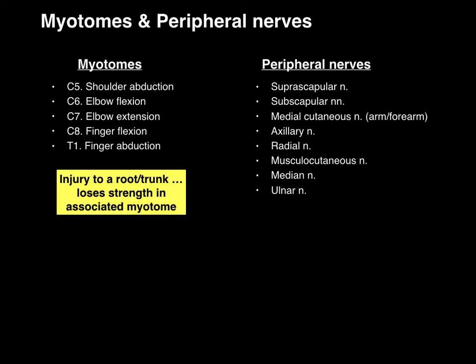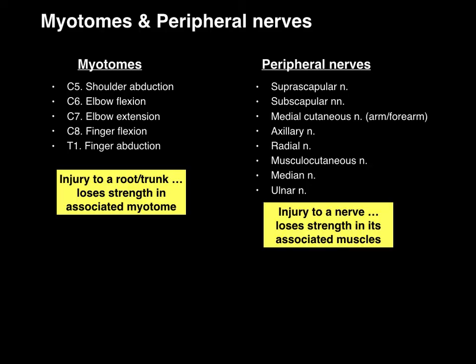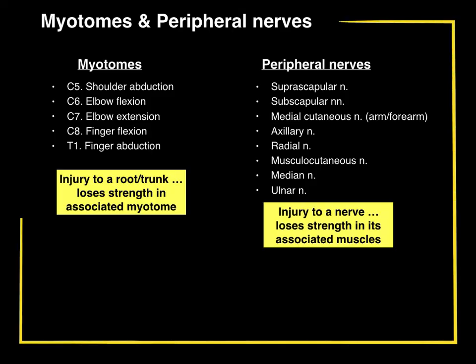In summary: if you injure a root or a trunk, you will lose strength in its associated myotome. If you injure a peripheral nerve, you will lose strength in all the associated muscles. And that is myotomes and peripheral nerves in a nutshell.